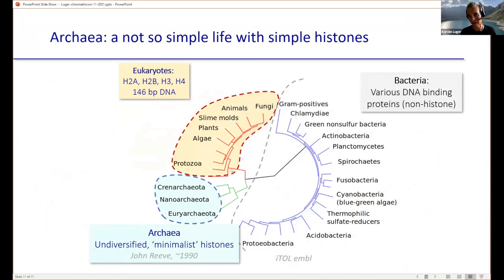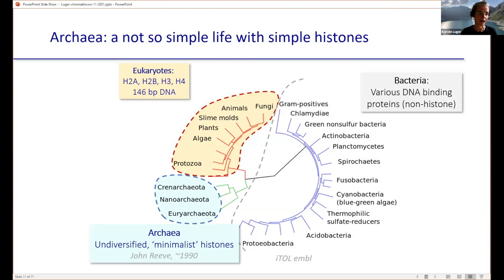Fortunately, there's a whole domain of life — the archaea or archaebacteria — that live a happy and fulfilling life with just one or two very minimalistic histone proteins. This was discovered in the early 1990s by John Reeve. This, together with other findings, gave rise to the idea that archaea were the precursors of the ancient eukaryote: the bacteria formed the mitochondria, the archaea formed the nucleus, and brought with them histones and the transcriptional machinery.